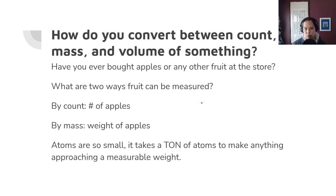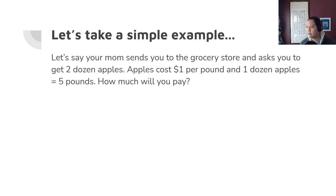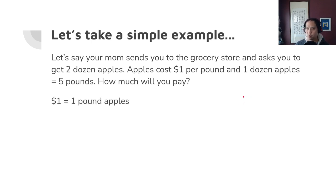Let's say your mom sends you to the grocery store and asks you to get two dozen apples. Apples cost one dollar per pound, and one dozen apples equals five pounds. You're trying to figure out how much money you need to bring. As 17 or 18 year olds, this is not an intimidating problem. The goal is to prove that you understand the basic concepts so you won't be intimidated when we apply them to chemicals.